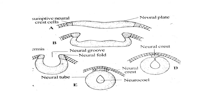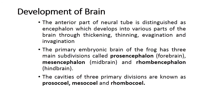The neurocele is the region within the neural tube. The anterior part of the neural tube is distinguished as the encephalon, which develops into the various parts of the brain through thickening, thinning, evagination, and invagination. The neural tube must differentiate into the brain anteriorly and the spinal cord posteriorly.